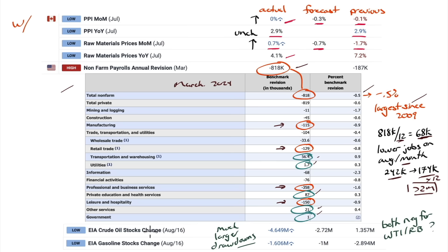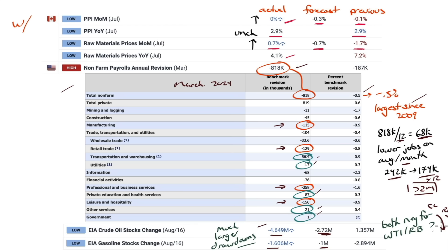Crude oil: big drawdowns on both oil stocks and gasoline stocks. The expectation was for a drawdown of 2.7 million barrels; it was 4.6 million. For gasoline, 1 million expected, it was 1.6 million. And when these reports came out, WTI went down and RBOB gasoline went down — so CL, the oil contract, and RB, the gasoline contract, both went down.